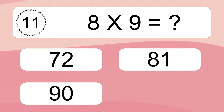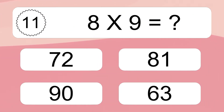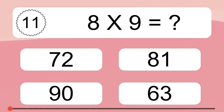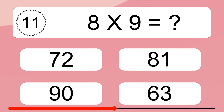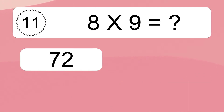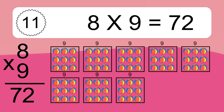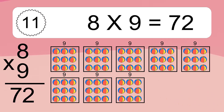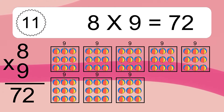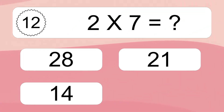8 times 9 equals what? We have 8 boxes, and each box has 9 colorful balls inside. If you count all the balls in all the boxes together, you will have 8 times 9 balls. This equals 72 balls.